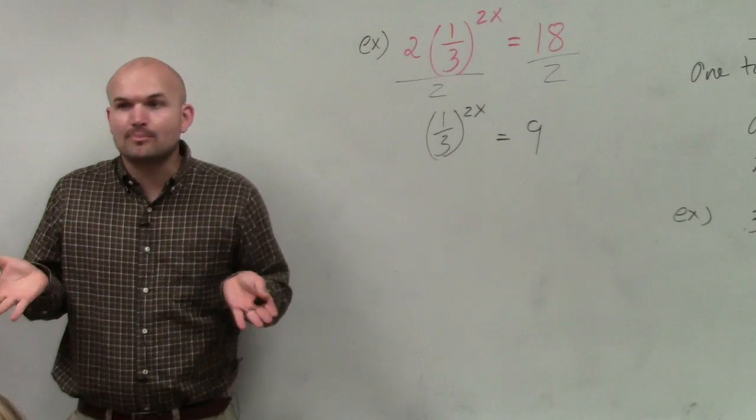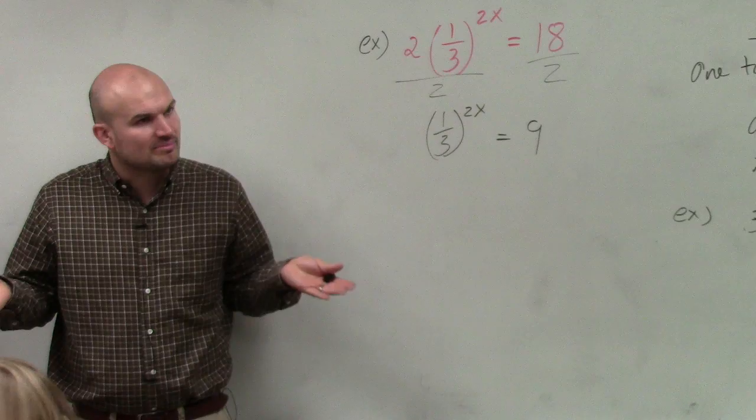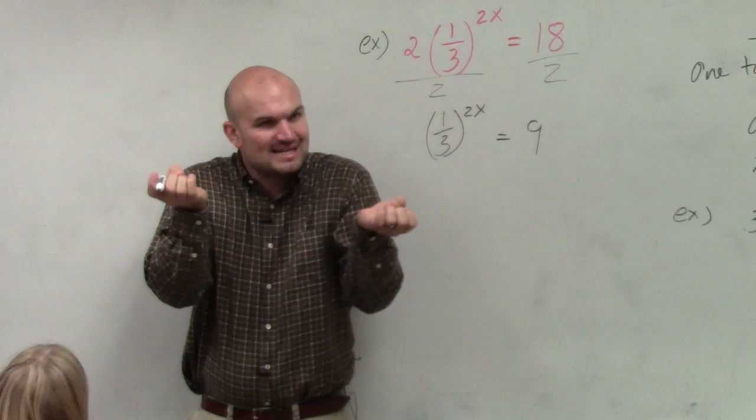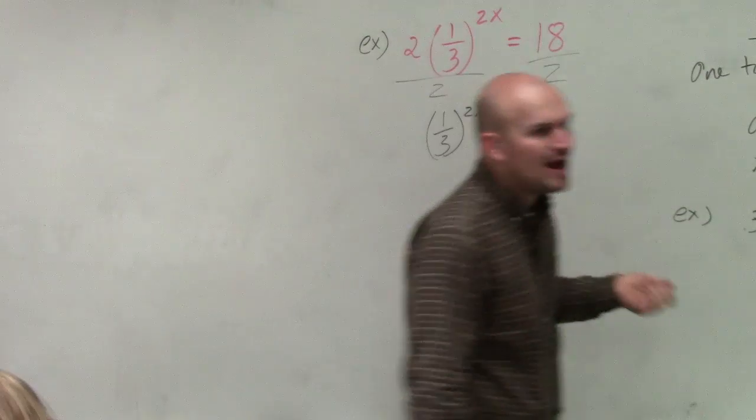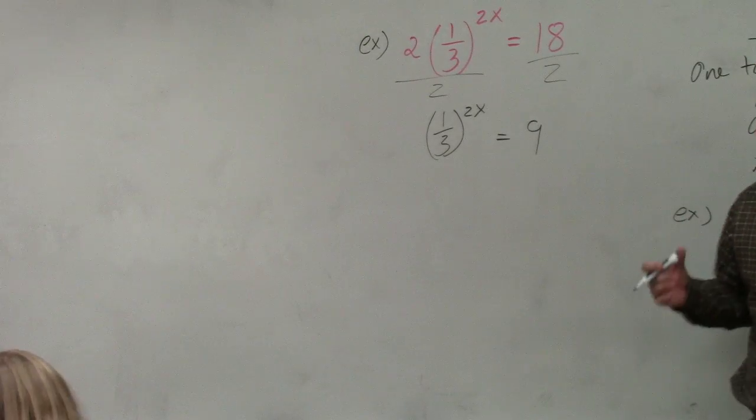Again, we've got to use our one-to-one property. That's what we always want to look for because it's pretty simple. If you have the same base of exponents, the powers equal each other. But the problem is we have a fraction. So how do we get rid of fractions?